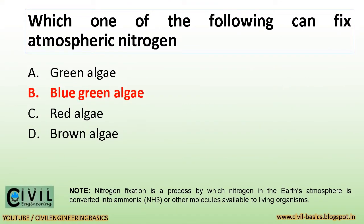Which one of the following can fix atmospheric nitrogen? Blue-green algae can fix atmospheric nitrogen. Note: nitrogen fixation is a process by which nitrogen in the earth's atmosphere is converted into ammonia (NH3) or other molecules available to living organisms.